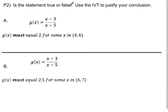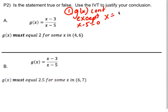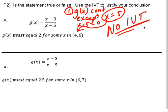So let's go ahead and do P2. Same thing. So when I go to look at continuity, I see that g(x) is continuous except when x minus 5 is zero, which is going to be at x equals 5. Well, right away, I noticed that it's not continuous at 5. So no IVT, this one's false.